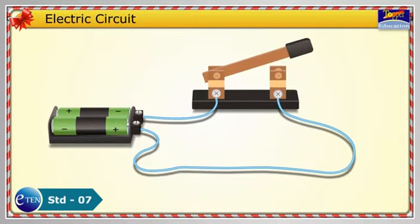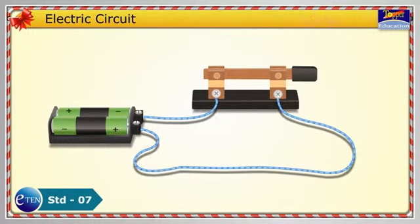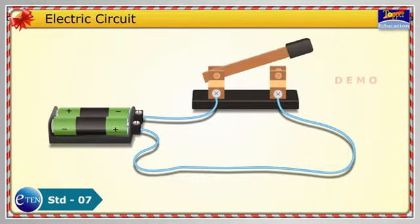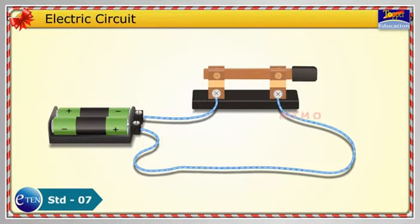A switch is a part of every electric circuit. The switch is simply a small gap in the conductor where you can close or open the circuit. When the switch is closed, the circuit is closed. An electric current flows.